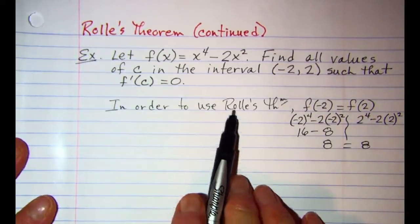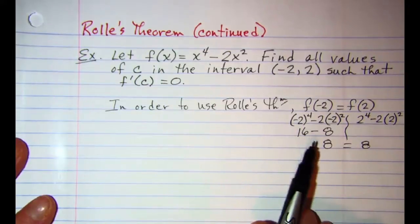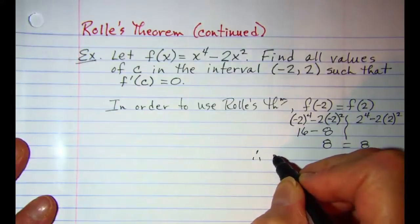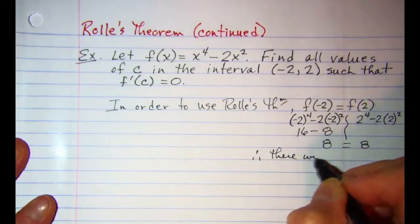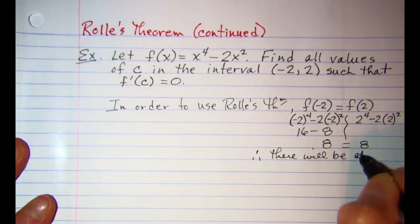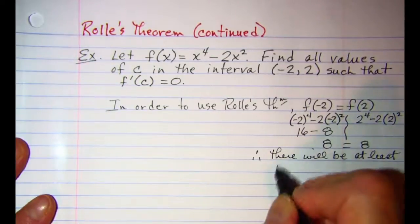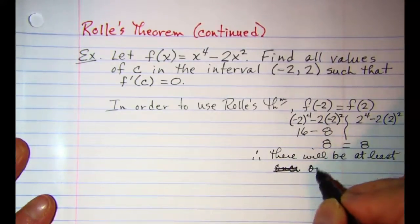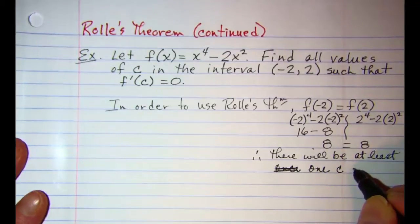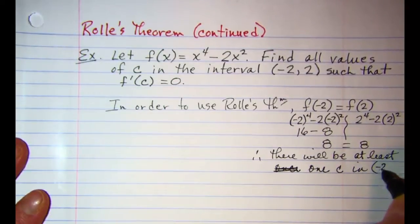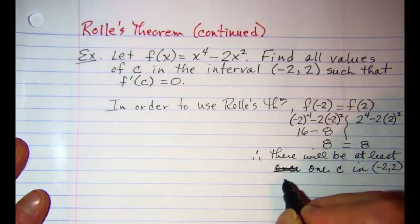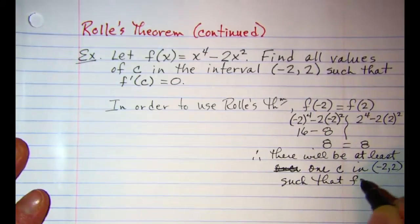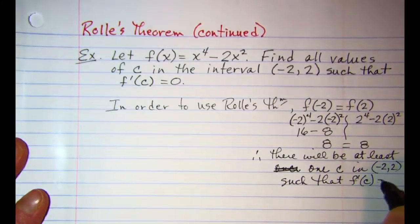So we know then by Rolle's theorem that there will be at least one c value in this interval from negative two to two such that the derivative evaluated at c is equal to zero.